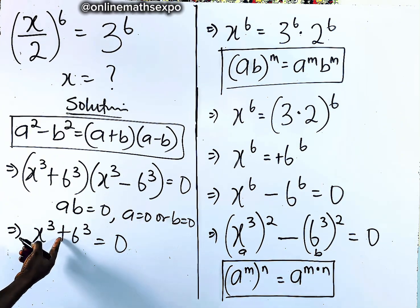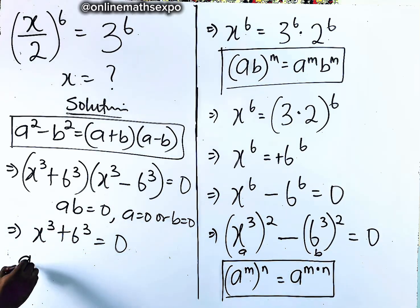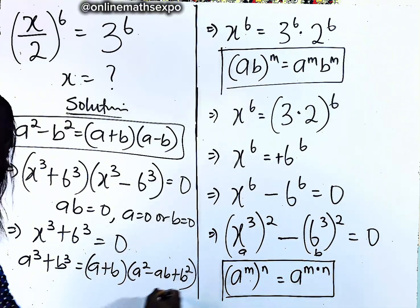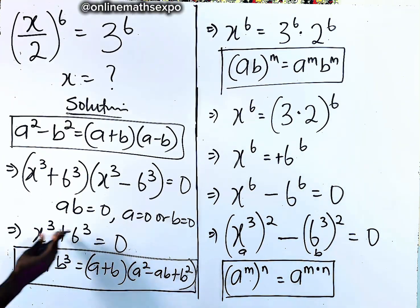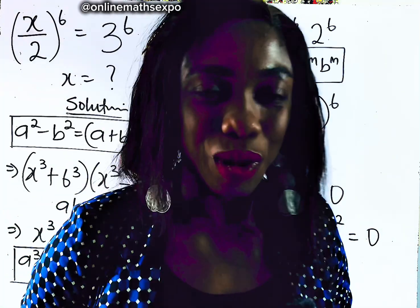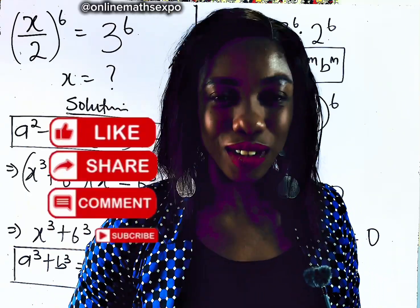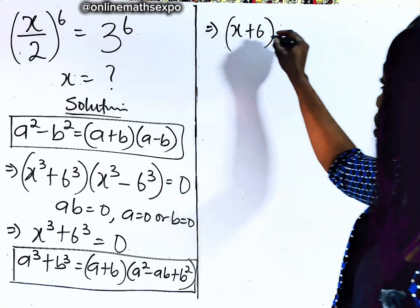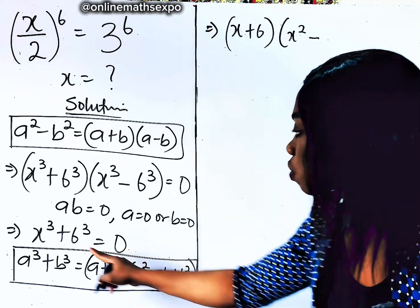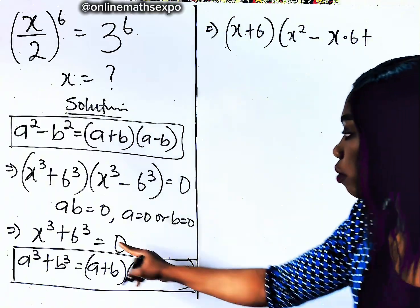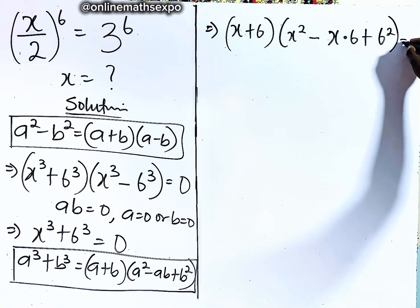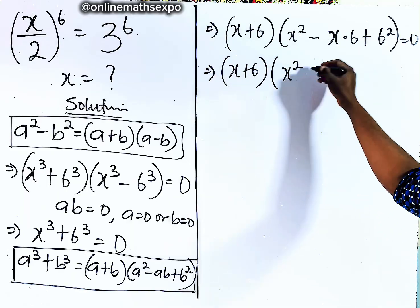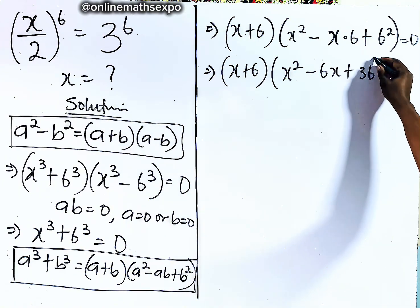Let's work with the first factor: x cubed plus 6 cubed equals 0. This is your sum of two cubes, which reminds you of the identity: a cubed + b cubed equals (a + b)(a squared − ab + b squared). Applying this identity, we get (x + 6)(x squared − 6x + 36) equals 0. Here, a is x and b is 6, so we have x + 6, then x squared minus 6x, and 6 squared gives us 36, all equal to 0.